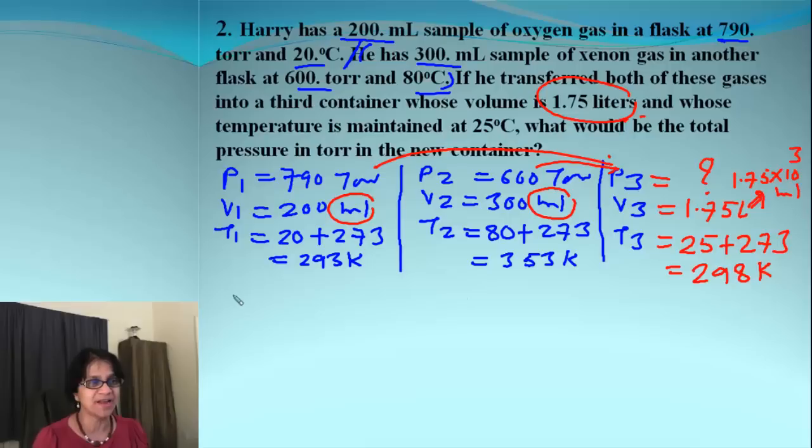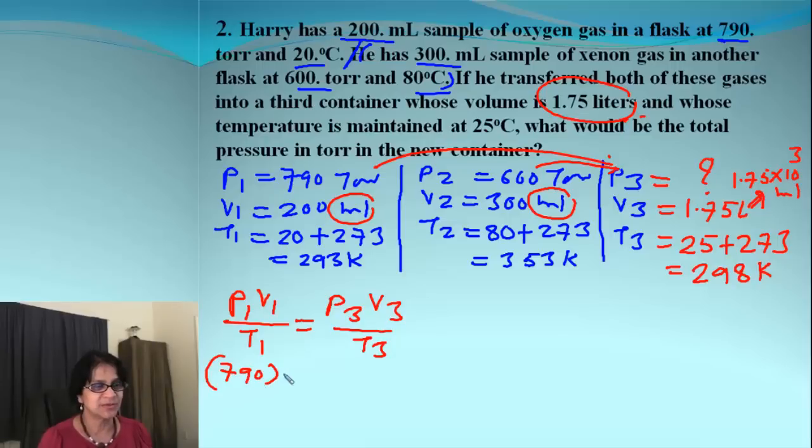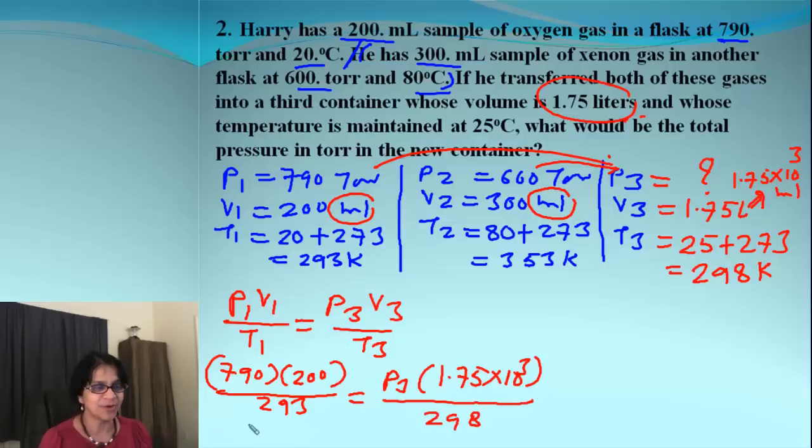Okay. So, our job is to find out the total pressure P3. And, how do you find out? We actually use the formula for Combined Gas Law. And, when the first gas mixes up into the bigger container, the new pressure, which we get, is different. So, it's P3 V3 over T3. And, when we need to plug and check, it's 790 times 200 over 293 equals P3, which is unknown. Then, it is 1.75 times 10 to the third, that divided by 298. And, when we solve for P3, what do we get? We get P3 equal to 91.8.